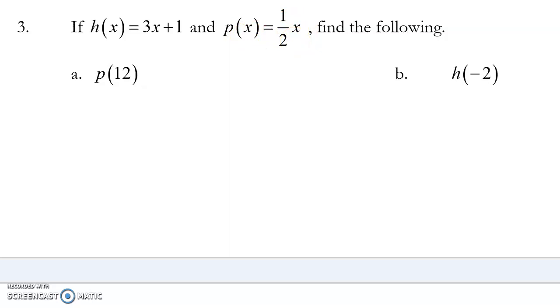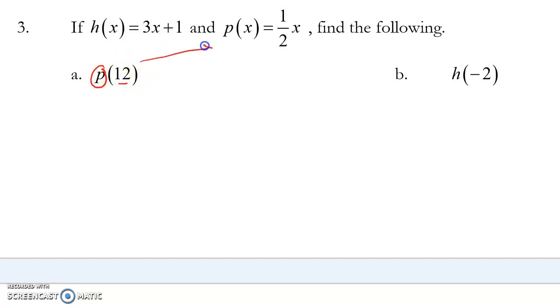So what you have to do is look at what function we use and what's the input value. So here, I want to use function p and input 12. I have to choose the correct function. I can't use this function. So I have to take p of 12. That's going to equal 1 half times x. x was 12. I put that into the function p. p of 12 is 6.